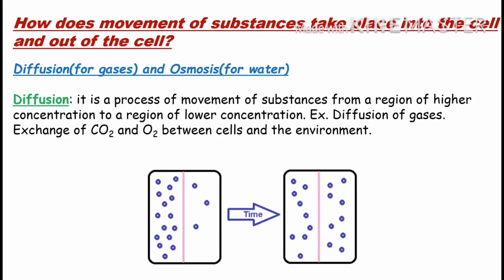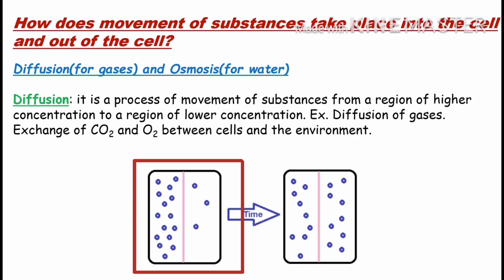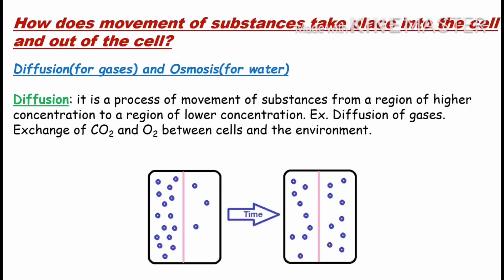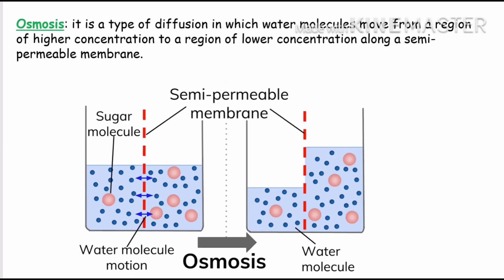Ab is diagram ki help se diffusion samajhte hain. Maano yeh ek container hai jismein paani hai aur upar se cheeni ki crystals daal rahe hain — yeh small blue dots cheeni ki crystals hain. Left side se cheeni daali toh us side cheeni ka concentration zyada tha. Kuch time mein left side ke sugar crystals right side mein shift ho jaayenge, kyunki wahan bheed zyada thi toh woh kam bheed wali side chale gaye. Isi process ko diffusion kaha jata hai — cheeni ke crystals paani mein diffuse hokar right side chale gaye. Isi process se ek cell ke andar aur bahar gases apni movement kar paati hain.